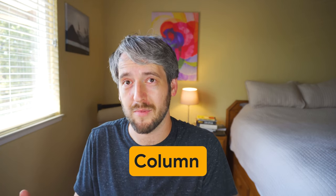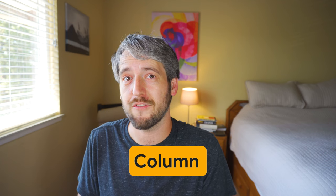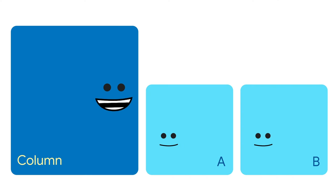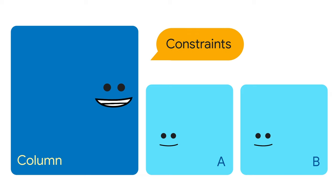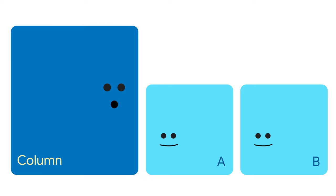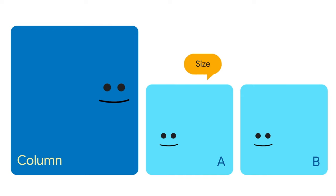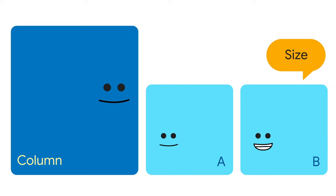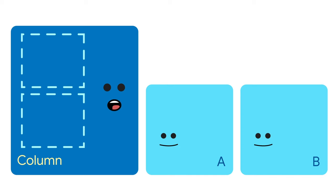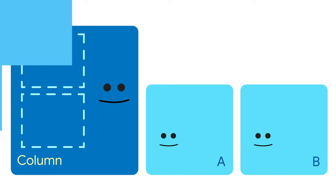Because Column and widgets like that have several children. The Column says: 'Kids, time to layout. If you could have any size you wanted, what would it be?' One child replies: 'I want 20 pixels, please.' Another says: 'I want 30 pixels.' The Column responds: 'All right, this is where you all will be.' That works pretty nicely, doesn't it?